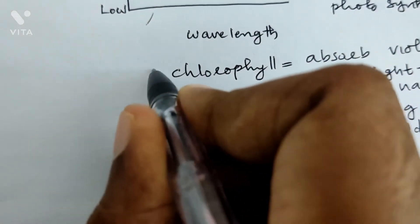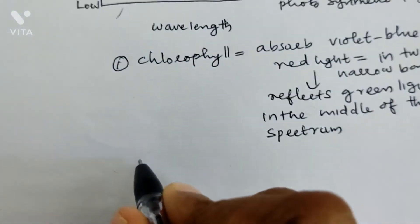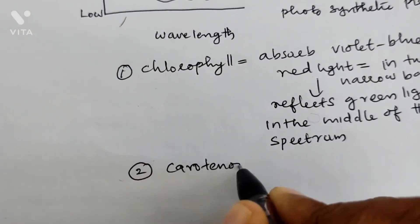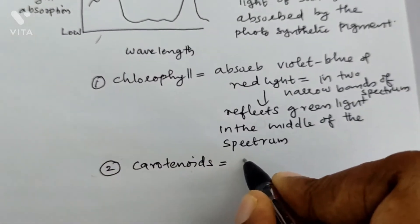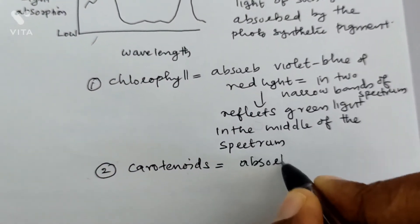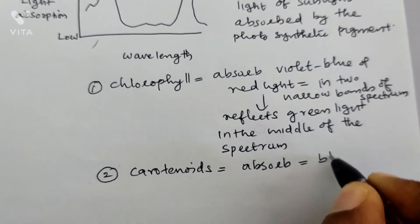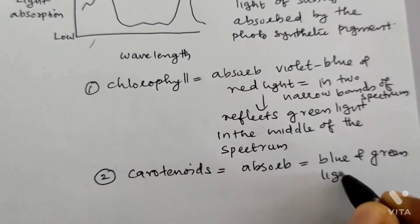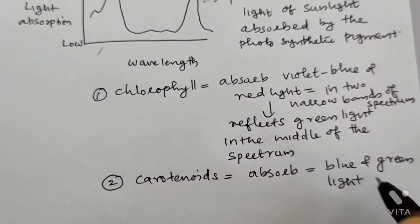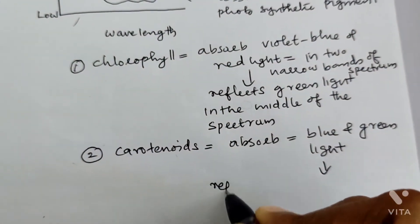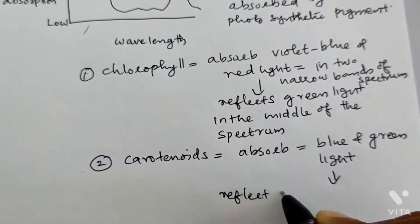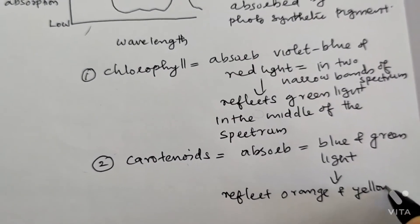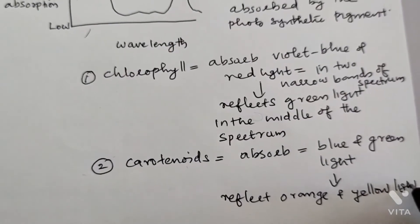Another example of a pigment is carotenoids. Carotenoids absorb blue and green light, and reflect orange and yellow light. So each photosynthetic pigment absorbs particular wavelengths of light and reflects a particular color.